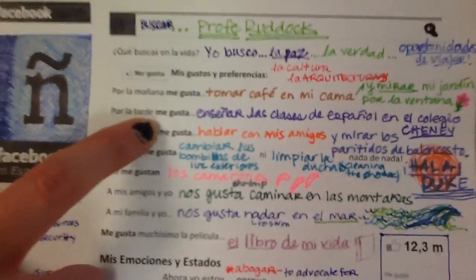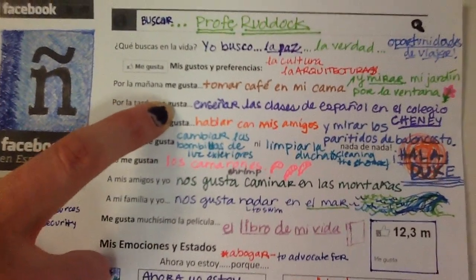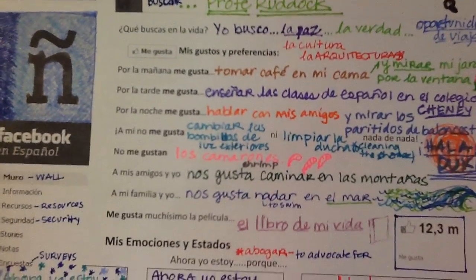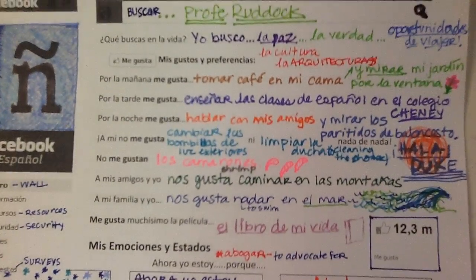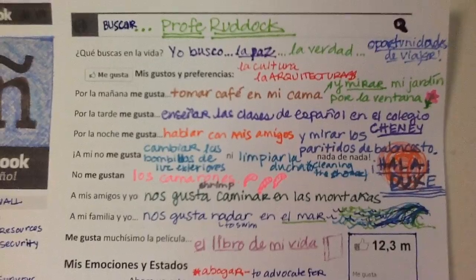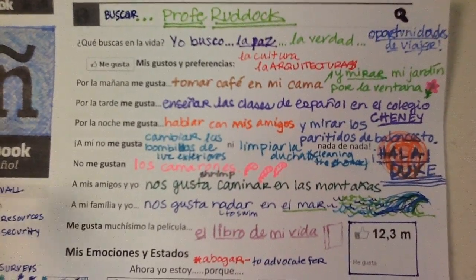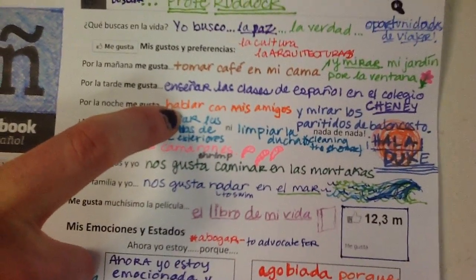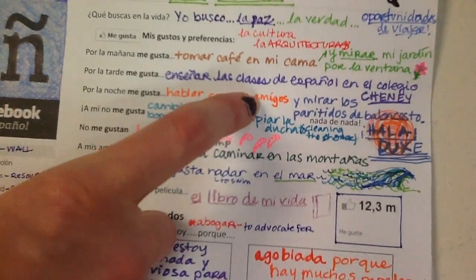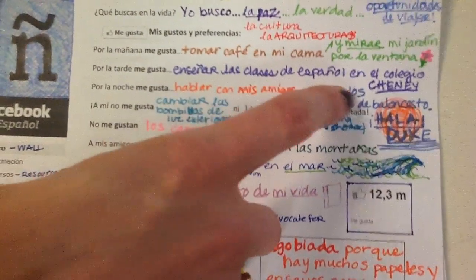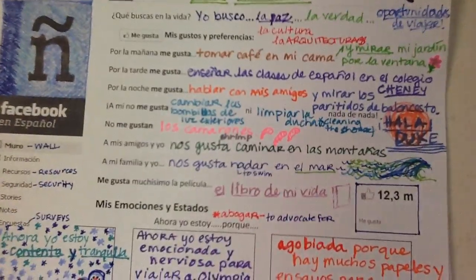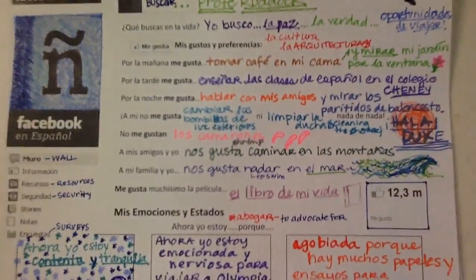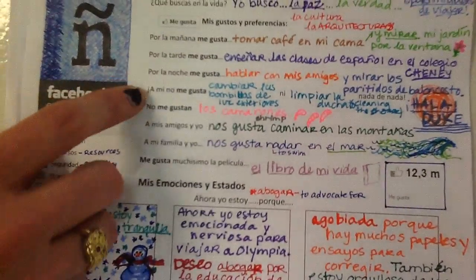Por la tarde me gusta — in the afternoon I like. I said I like to enseñar las clases de español en el colegio Chini — I like to teach Spanish classes at Chini High School. Por la noche — at night time — me gusta hablar con mis amigos y mirar los partidos de baloncesto — to watch basketball games. Go Duke! Down with UNC.